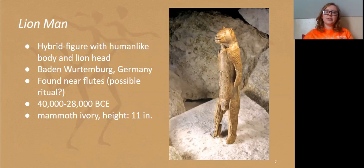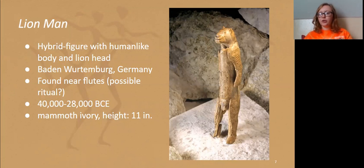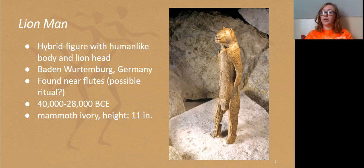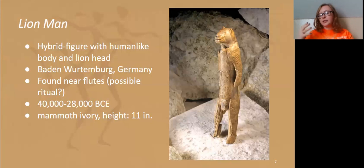This is called the Lion Man. It was found in Baden-Württemberg, Germany, and it's considered a hybrid figure with a lion-type head and a human body. We actually don't have any clue what it was used for, but since it was found near flutes and some musical instruments, we have an idea it was probably some type of ritual. This is the oldest form of artwork we have ever found — between 40,000 and 28,000 years old BCE. It's made of mammoth ivory and is about 11 inches tall, perfect to use in a ritual or pass around in a group setting.